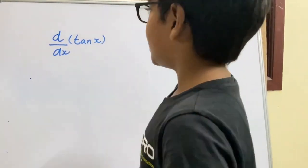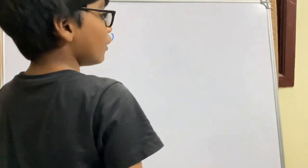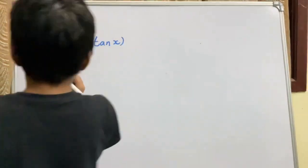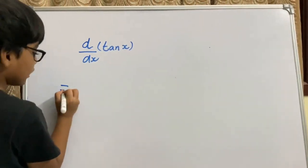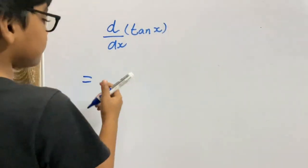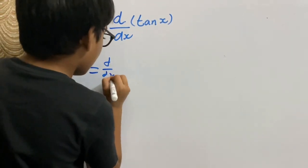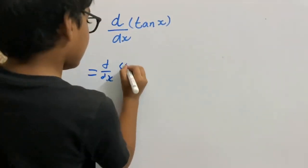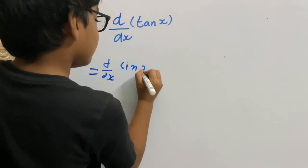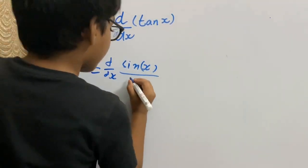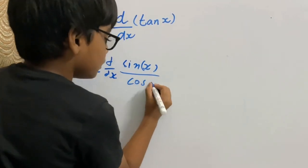Hi everyone, we're going to see how to do the derivative of tan x. The derivative of tan x can be written as sin x by cos x, so the derivative of sin x by cos x.